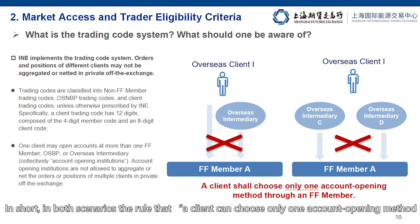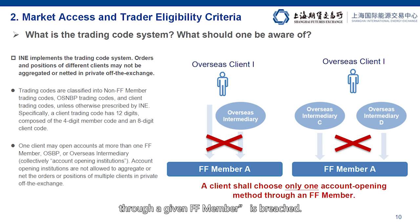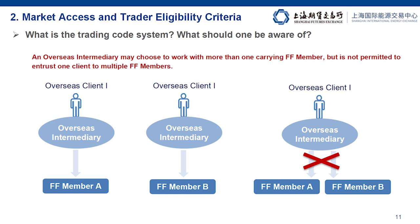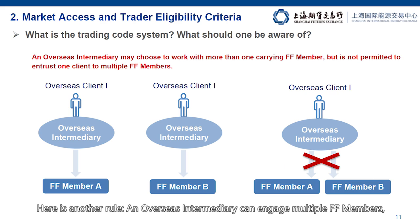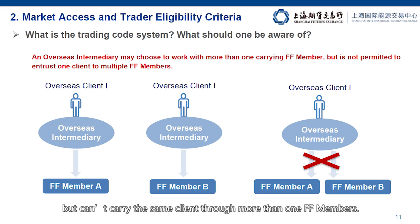Here is another example. An overseas client wants to open accounts through overseas intermediaries C and D, but also hopes both intermediaries will route the orders through the same FF member A. This also breaks the rule that trading codes must be unique and is thus not permitted. In short, in both scenarios, the rule that a client can choose only one account opening method through a given FF member is breached.